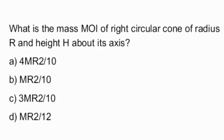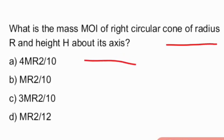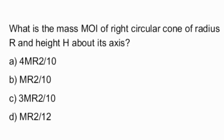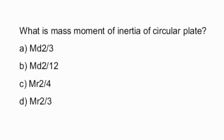What is the mass moment of inertia of a right circular cone of radius R and height H about its axis? The answer is 3MR²/10 — option C is the right answer.